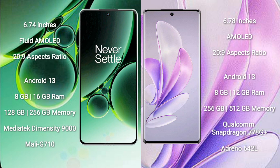OnePlus Nord 3 comes with 8GB and 16GB RAM, and 128GB and 256GB internal storage. It features a MediaTek Dimensity 9000 processor and GPU Mali-G710.